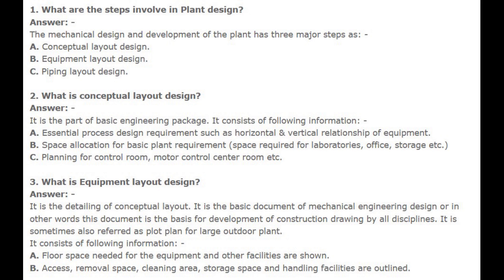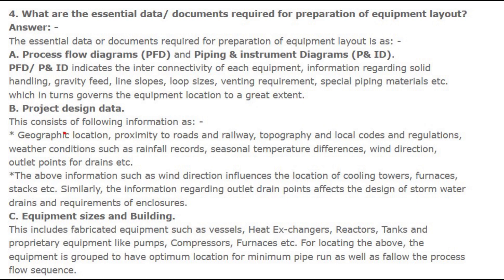Number 4: What are the essential data and documents required for preparation of equipment layout? Answer: The essential data or documents required are: a. Process flow diagrams (PFD) and piping and instrument diagrams (P&ID). PFD and P&ID indicate the interconnectivity of each equipment, information regarding solid handling, gravity feed, line slopes, loop sizes, venting requirements, special piping materials, etc.